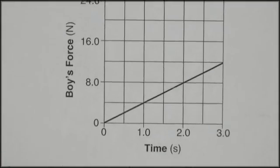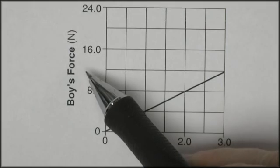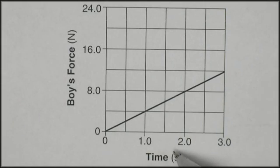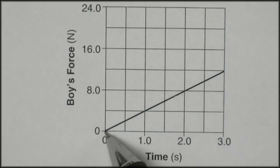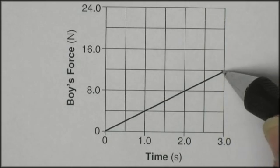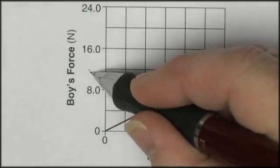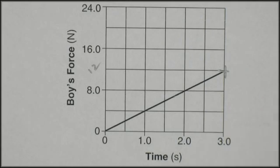The graph shows the relationship between the boy's force as the boy applies to the spring scale over time. Well it doesn't indicate they're moving - it doesn't matter. So the boy goes from 0 to, what is this, 4, 8, 12, 16... okay, this goes up to 12 newtons of force in three seconds.